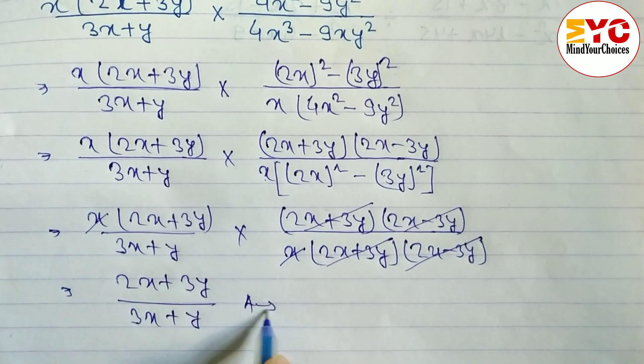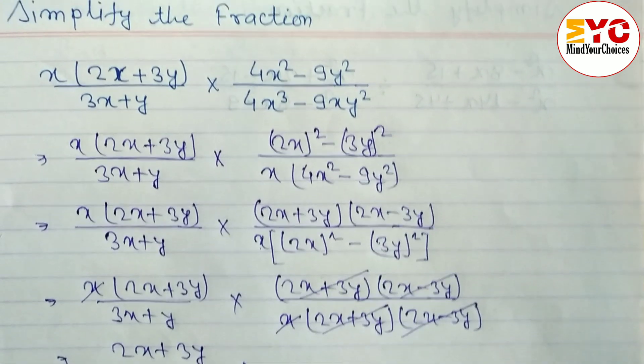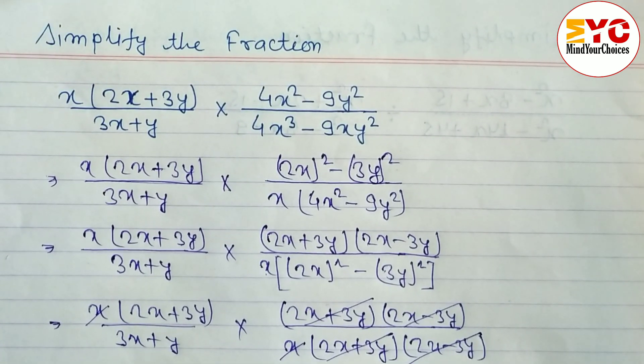And what is remaining here: 2x plus 3y by 3x plus y. So this one is the answer of this rational expression. I hope you understand this question.